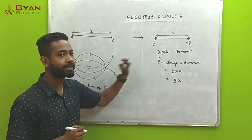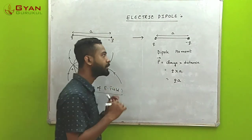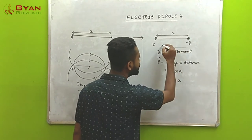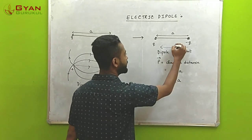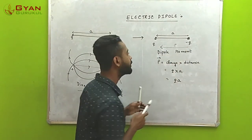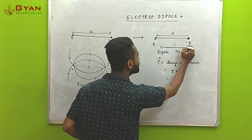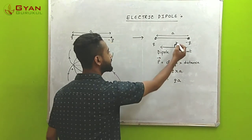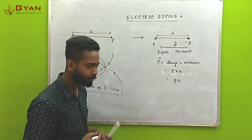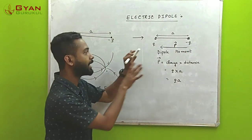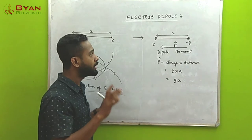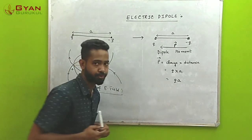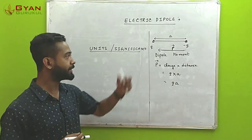Since dipole moment is a vector quantity, it has a direction. For a dipole, the direction is always from the negative charge towards the positive charge — it extends from the negative and ends at the positive charge. That is the direction of dipole moment.